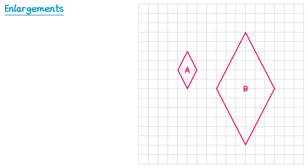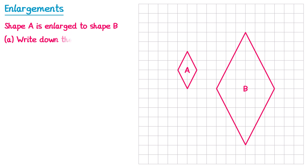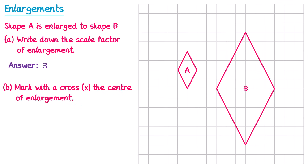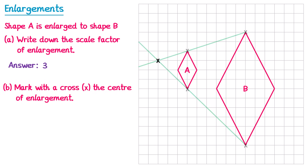Sometimes we have to do the same process in reverse. An enlargement may already have been done and the question could say: shape A is enlarged to give shape B — write down the scale factor of enlargement. The height of A is 4 squares and the height of B is 12 squares. 4 multiplied by 3 gives 12, so the scale factor must be 3. For part B, to find the centre of enlargement, draw straight lines from the top of B to the top of A and continue, then do this with another point. Where the lines cross is the centre of enlargement.